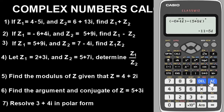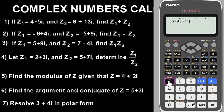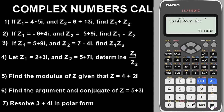Question three is multiplication. Put z1 in brackets: 5 plus 9i, close the brackets, open brackets for z2: 7 minus 4i, close the brackets. Press Equals. The answer is 71 plus 43i. You can choose to insert the multiplication sign explicitly between the brackets — you will still get the same answer: 71 plus 43i.